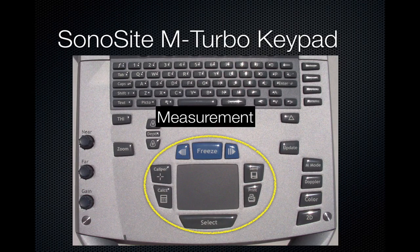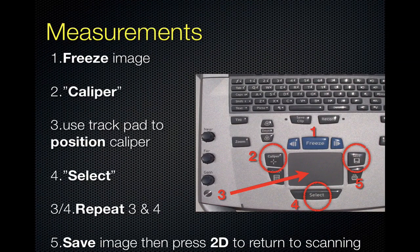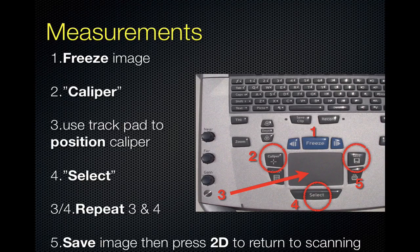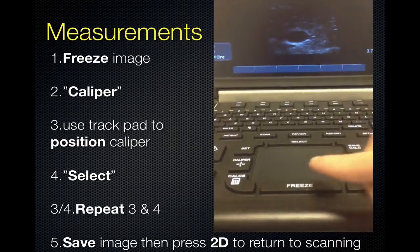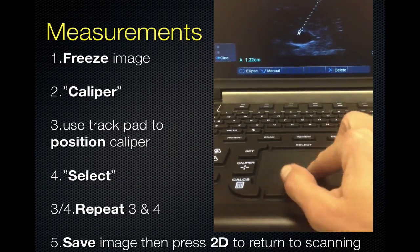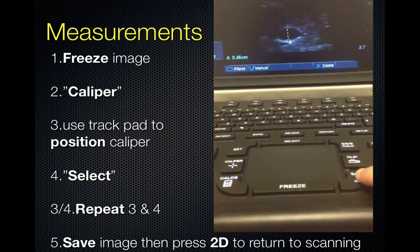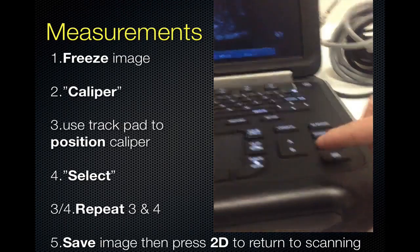When you need to measure structures with calipers, use the buttons in the middle of the field. The sequence is: first, freeze the image; then select Caliper. Use your trackpad to position the caliper on one side of the object you are measuring and hit Select to lock it in. Repeat to place the caliper on the opposite side and hit Select to lock it in. Then save the image and press 2D to return to scanning.